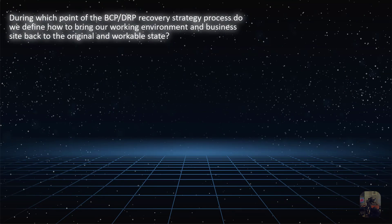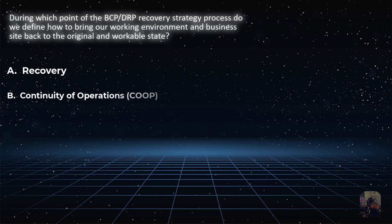During which point of the BCP DRP recovery strategy process do we define how to bring our working environment and business site back to the original and workable state? Is it choice A, Recovery? Is it choice B, Continuity of Operations? Is it choice C, Restoration? Or is it choice D, Parallel Test?